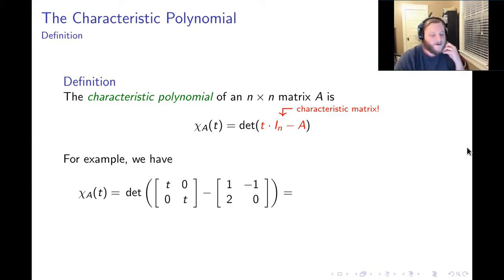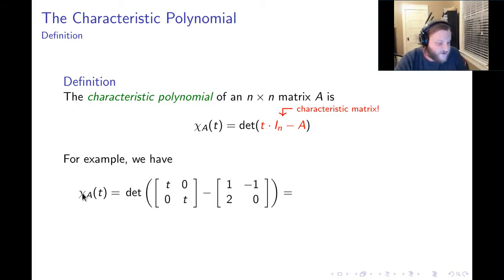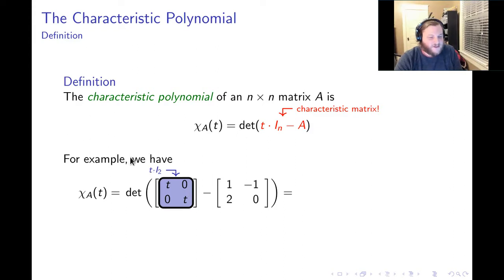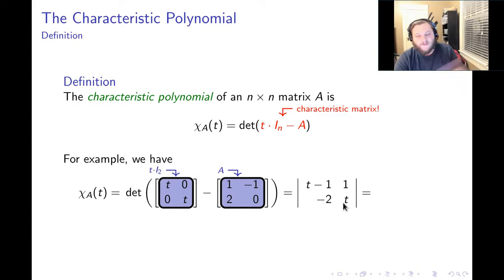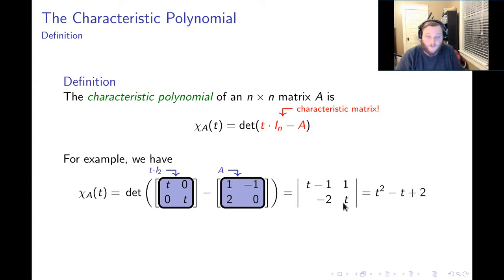Let's look at an example. The matrix I'm studying is this 2 by 2 whose columns are 1, 2, negative 1, 0. I'm going to take its characteristic polynomial, chi sub A of T. To do that, we look at the characteristic matrix — T times the 2 by 2 identity minus A — and take its determinant. The columns are T minus 1, negative 2, 1, and T. Taking this determinant gives T squared minus T plus 2. So the characteristic polynomial of this 2 by 2 matrix is this quadratic polynomial.